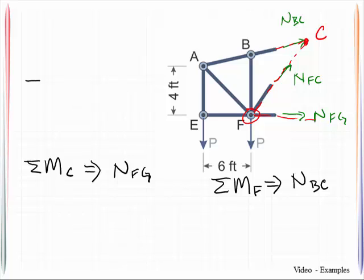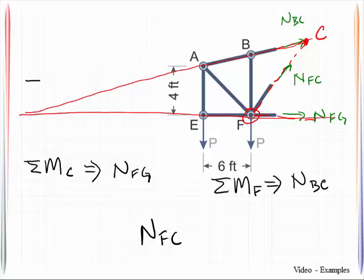Now in order to get FC I could take my other two unknowns and I would project those out here and find a point. I'm going to call that O. And what it says is if I sum moments about point O I can then directly solve for NFC.